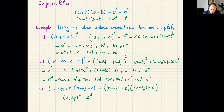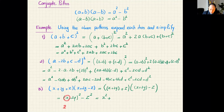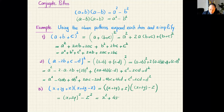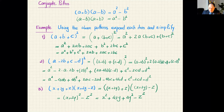The problem isn't finished because there's still a bracket left. Can I use another pattern? Yes — the squaring pattern. Expanding (x + 2y)² gives x² + 4xy + 4y², so the final answer is x² + 4xy + 4y² − z². There are no like terms, so this is the final result.